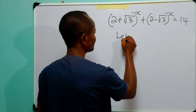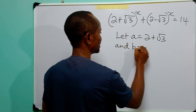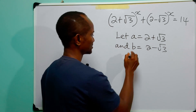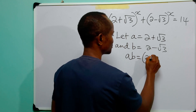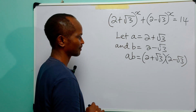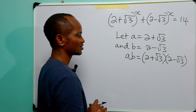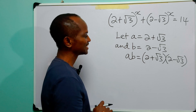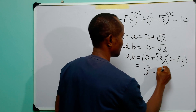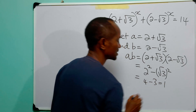Let A equal to 2 plus root 3, and B equal to 2 minus root 3. Let us multiply these two quantities. We have A multiplied by B equal to (2 + √3)(2 − √3). This is the expansion for difference of two squares, so this is equal to 2 squared minus root 3 squared, which is 4 minus 3, equal to 1.